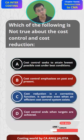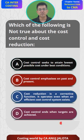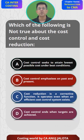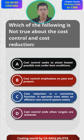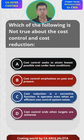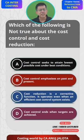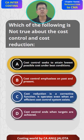Now let's evaluate the options. Option A says cost control seeks to attain the lowest possible cost under the best conditions — but it should be under the existing conditions, not the best conditions. So A is not true. Option B says cost control emphasizes past and present — that is correct. Option C says cost reduction is a corrective function operating even when an efficient cost control system exists — yes, correct. Option D says cost control ends when targets are achieved — yes, correct. Therefore, the answer is A.